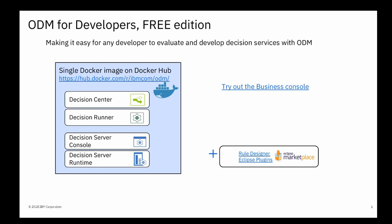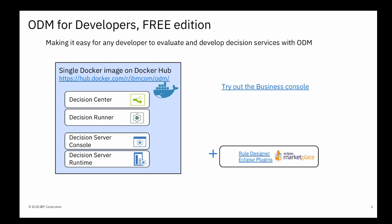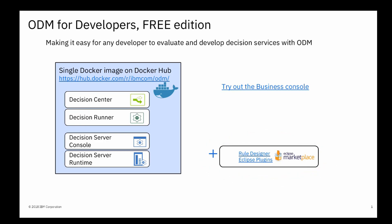The free edition of ODM is pre-populated with some sample rules and data. So you can get started right away by inspecting and editing these rules in the decision center business console. If you want to begin developing your own rule projects, you will need to install the free rule designer plugin into an existing copy of Eclipse, available from the Eclipse Marketplace.